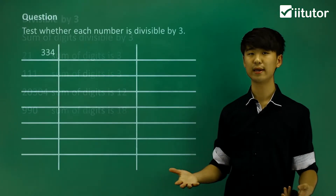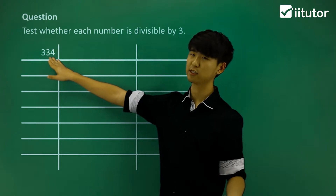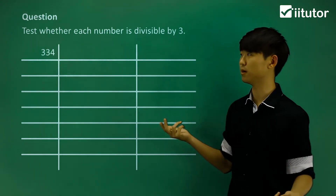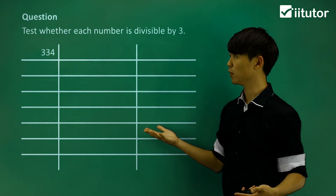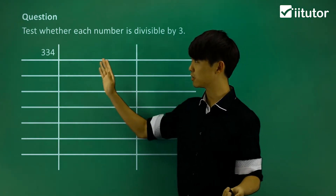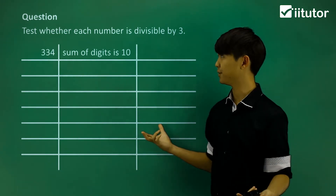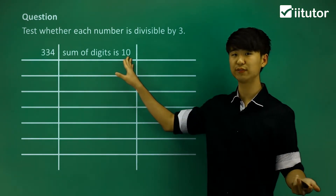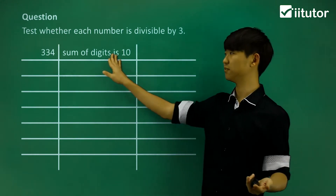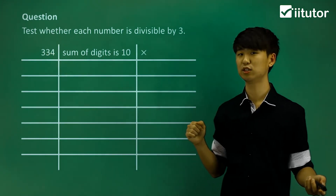Let's try to determine divisibility for some of these numbers. The first number is 334. We're going to see if that is divisible by 3. Like we said, we take a look at the sum of its digits. So 3 plus 3 plus 4 is going to give me a sum of digits equal to 10. And we know that 10 is not divisible by 3. So since the sum of digits is not divisible by 3, then our actual number is not divisible by 3.